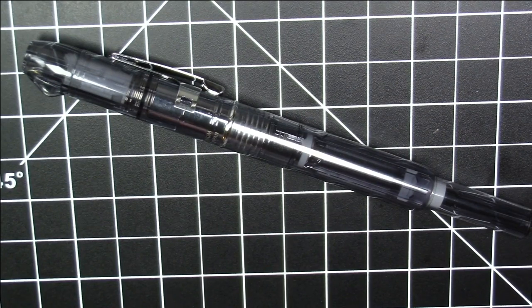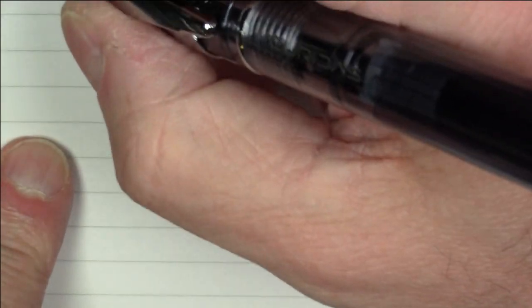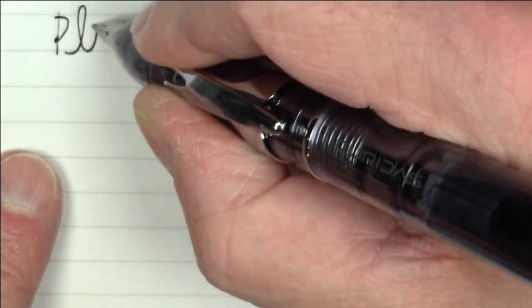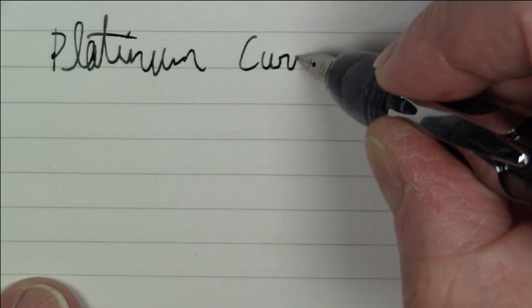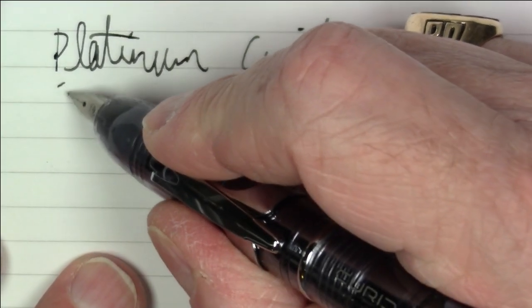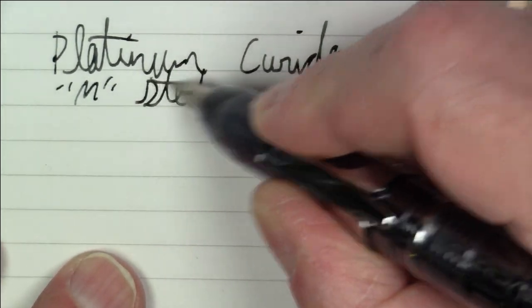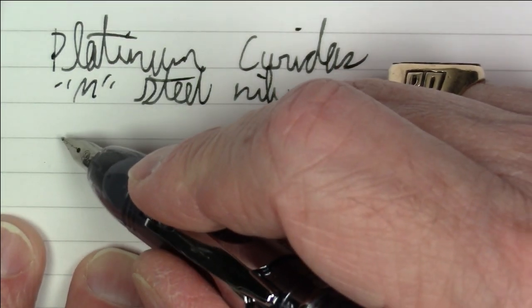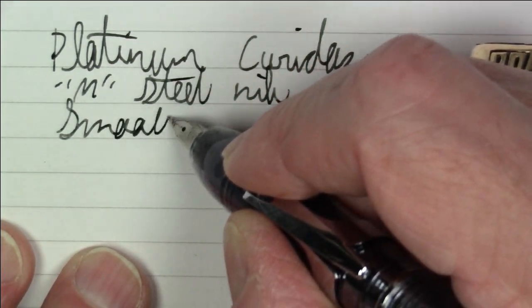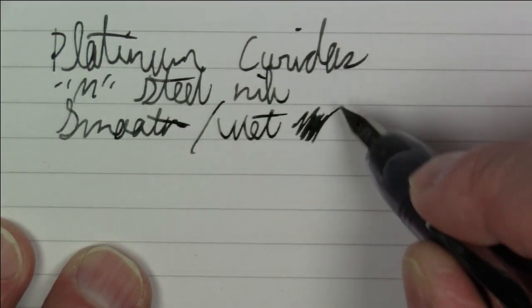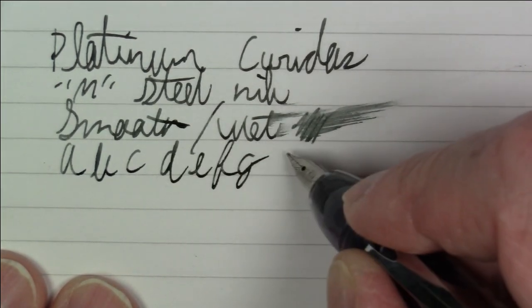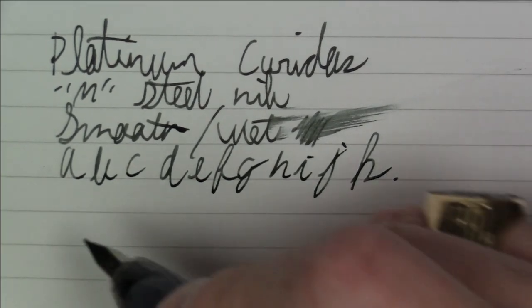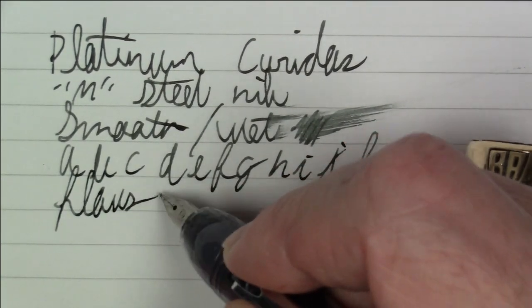Well, now that we've seen how the guts of it work, let's talk about how it writes. I'm sure you want to see how it writes and you're going to see that right now. Okay, folks, what we're writing with here is a Platinum Curidas. And this has a medium steel nib. And I think this writes great. It is smooth. It is wet. I just think it writes really, really well. Yeah, it has really nice flow.